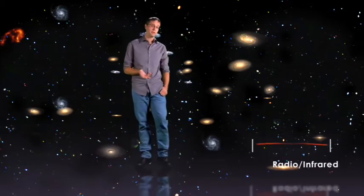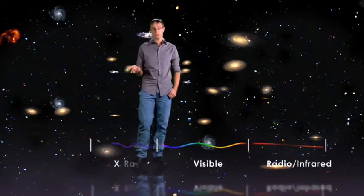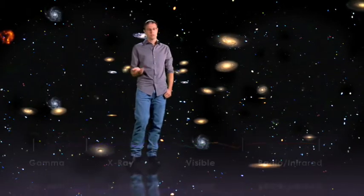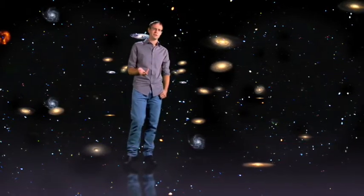from radio and infrared, to visible light, to X-rays and even gamma rays, moves at the same speed. So what would explain these differences in arrival times?